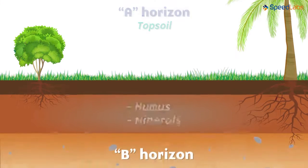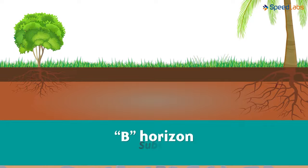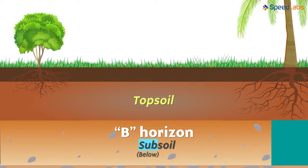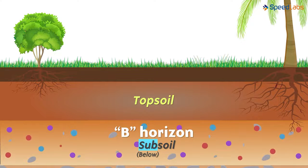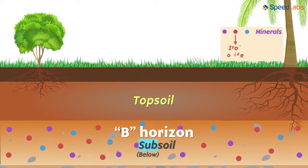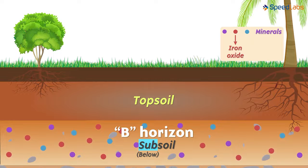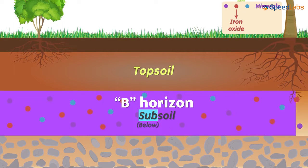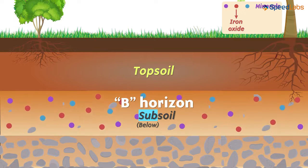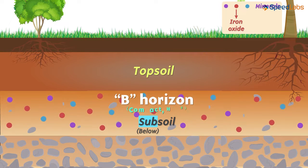Next in the list is the B horizon, also called the subsoil — sub here refers to below, meaning the layer present below the topsoil. This layer has a reddish tone, mainly due to the presence of many minerals. Iron oxide is found in very large quantities, and that is the major reason for the B horizon to appear reddish-brown in colour. In spite of the presence of minerals and clay, this layer is very compact and hard, and only a few large trees have their roots growing in this region.